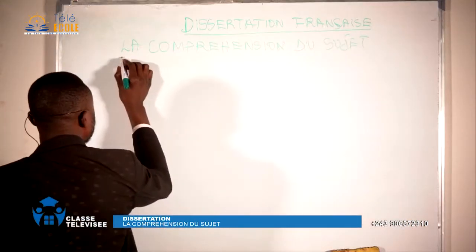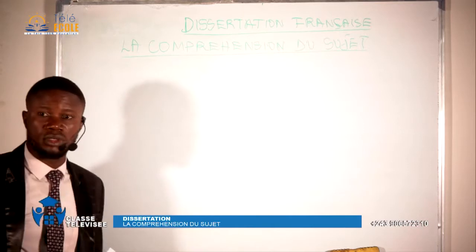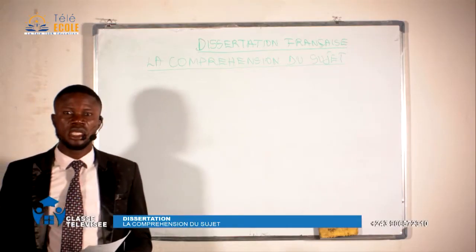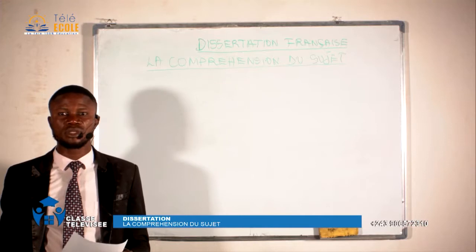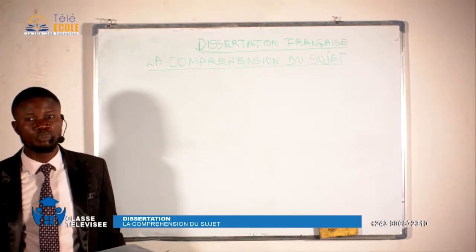Les élèves de sixième, vous devez me suivre avec attention parce qu'il y a une épreuve de dissertation qui vous attend. Je dis que l'essentiel pour connaître un sujet de dissertation, c'est de reconnaître aussi sa nature. Les sujets de dissertation sont catégorisés en trois catégories : les énoncés simples, les phrases sentencieuses — le proverbe, la fable et autres — et troisièmement, les énoncés complexes.